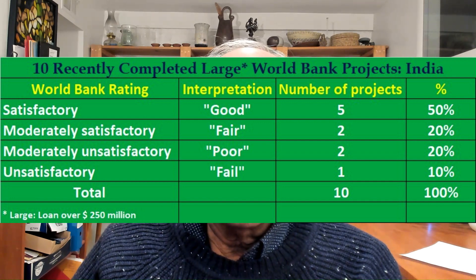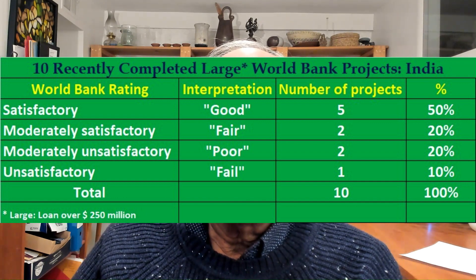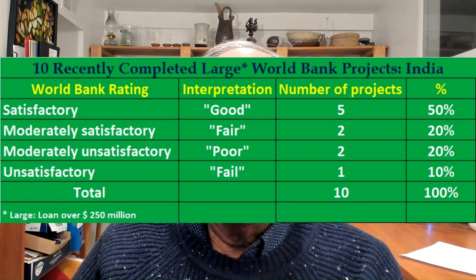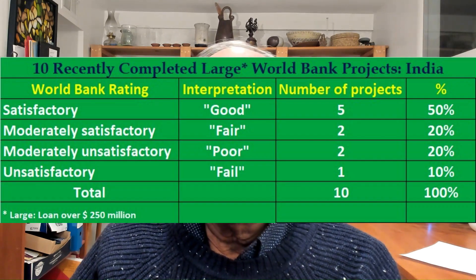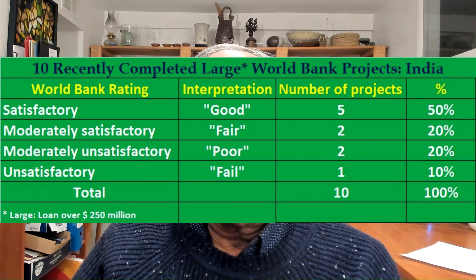Not very often does this rating get used. So here we have seen the rating system and we have understood what it means. And what it shows us is that only five out of the ten large projects that were recently completed were rated as good. So it's natural to ask, how does the World Bank come up with these ratings?